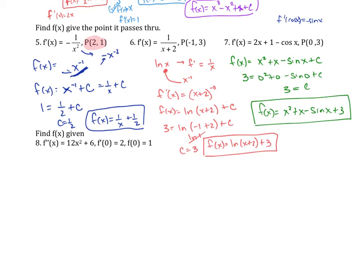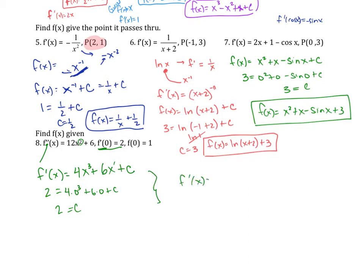This next one gives a second derivative. The process is the same — take the antiderivative to get the first derivative. Since the second derivative has 12x squared and 6, I need x cubed with coefficient 4, and x to the first with coefficient 6, plus a first constant. Given that f prime of 0 equals 2: 2 equals 4 times 0 cubed plus 6 times 0 plus C, so C equals 2. Thus f prime of x equals 4x cubed plus 6x plus 2.